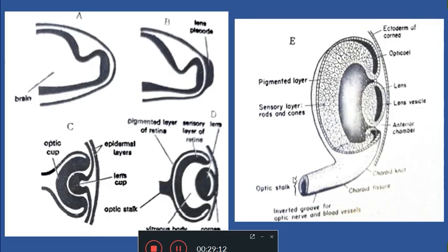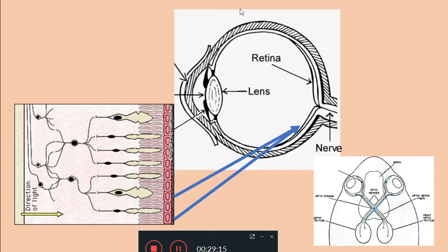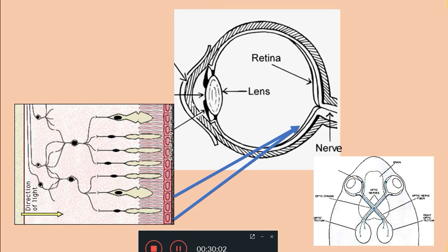Now the two chambers of the eyeball: the larger chamber between the lens and the retina is called as the vitreous chamber, which gets filled with an amorphous gel-like substance called as vitreous humor, formed from the retinal cells as well as the lens cells; it maintains the shape of the eye. The small cavity between the cornea and the lens is called as the aqueous chamber, filled with a fluid called as aqueous humor, which is initially produced in the vitreous chamber and then strained into the aqueous chamber.